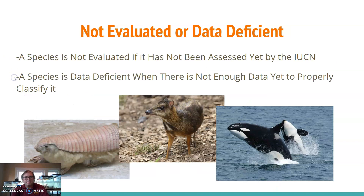The first two categories are not evaluated and data deficient. A species is not evaluated if it has not been assessed yet by the IUCN — basically they haven't gotten any scientists looking at those populations yet, but hopefully that can change. A species is data deficient when there is not enough data yet to properly classify it — there may have been some studies done but not enough to really affirm whether or not the animal is endangered.